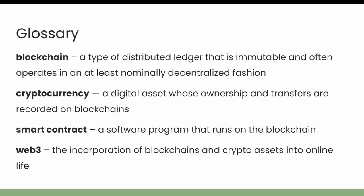To begin, a blockchain is a type of distributed ledger that is immutable and often operates in an at least nominally decentralized fashion. It is a database where people can generally only add to the ledger, and once an entry has been added, it is very difficult — nearly impossible in most cases — to edit or remove that entry.